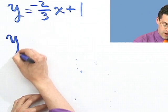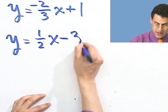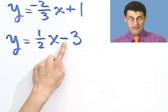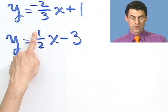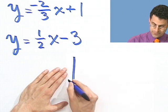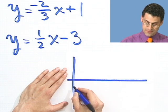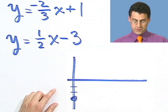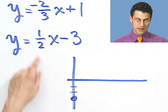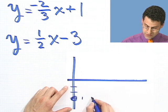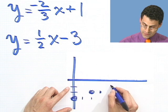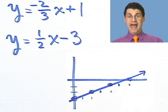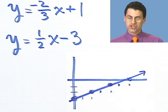Let's try another one: y equals one half x minus 3. The y-intercept is minus 3, and the slope is 1 over 2. The line crosses the y-axis at minus 3. From there, the slope of 1 over 2 means 2 over in the x direction and 1 up in the y. Repeating that step gives a beautiful and accurate picture of the line just from knowing its equation.